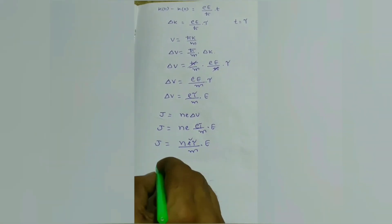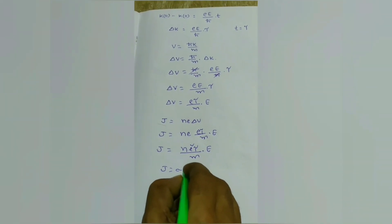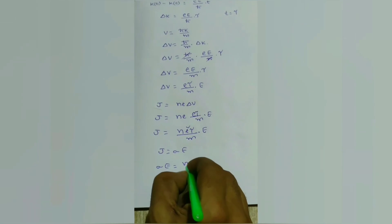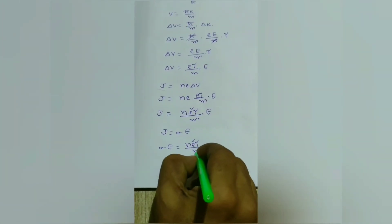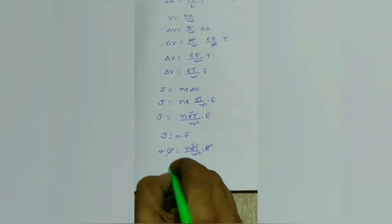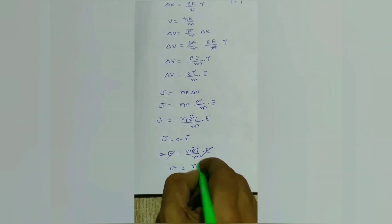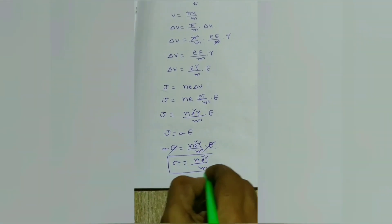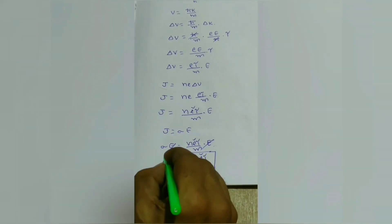According to Ohm's law, j = σE. Therefore, σE = (ne²τ/m)E. Simplifying, σ = ne²τ/m. This is called electrical conductivity of electrons.